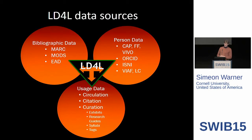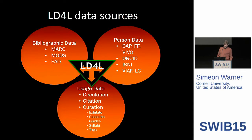We started with a picture of three institutions and three types of data to think about first. Bibliographic data — these MARC records we've heard quite a lot about, but also bibliographic data in other formats. Data about people and organizations — our three institutions, for example, have three different profile systems for people. And what can we do about usage data? We have notions of circulation, citation, and the extra curation data provided by our specialists, our librarians, as they organize the collection.